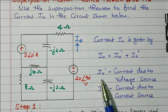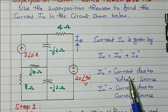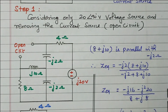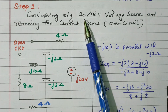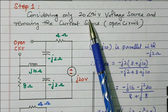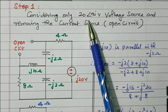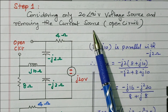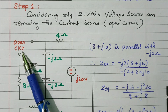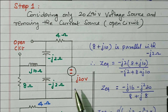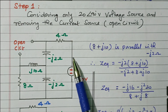First we will find I₀ dash. Step one: consider only the voltage source. The current source is removed by open circuit. Now only the voltage source is available, and we need to find the current I₀ flowing through this circuit.